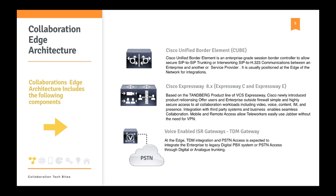Cisco Unified Border Element allows SIP-to-SIP trunking or SIP-to-SIP interworking, whether with another enterprise — for example in a merger scenario — or with a SIP service provider, positioned at the edge of the network. The next slide will show you exactly the best practices for positioning CUBE gateways.